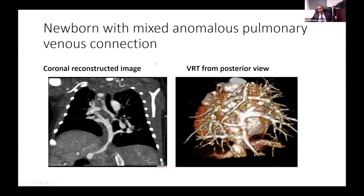This is a newborn with mixed anomalous pulmonary venous connection. We were taught pulmonary veins are four — two on each side — but with this advanced imaging technique we are seeing really more than that. You can see this mixed total vein going to the portal hepatic system, a vertical descending vein, and at least three veins attaching to the confluence, two veins on the left side, and an additional vein heading up to the SVC — one from the right, one from the left. Looking from the back of the patient, you can see like seven pulmonary veins in this patient.